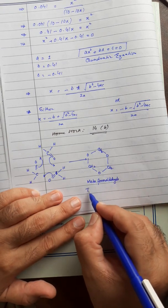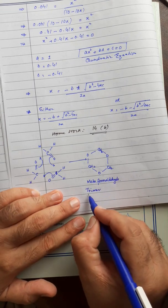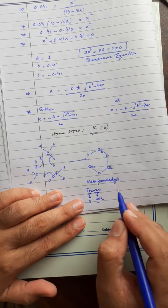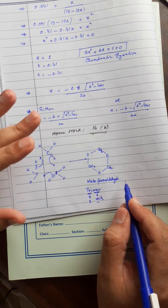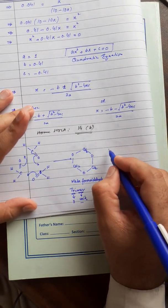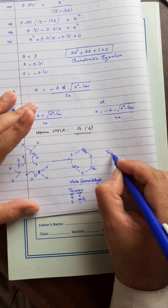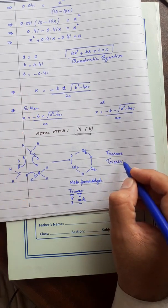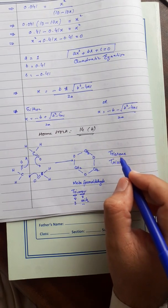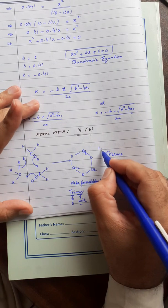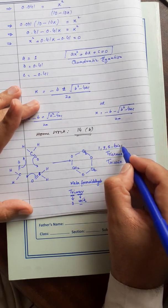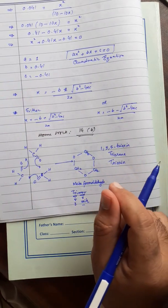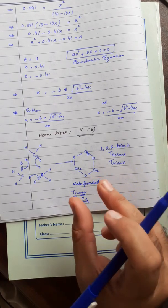This product is called metaformaldehyde. It is a trimer - tri means three and mer means units. This metaformaldehyde is also called trioxane, or 1,3,5-trioxane. So trimer means a compound which is formed by the combination of three units.